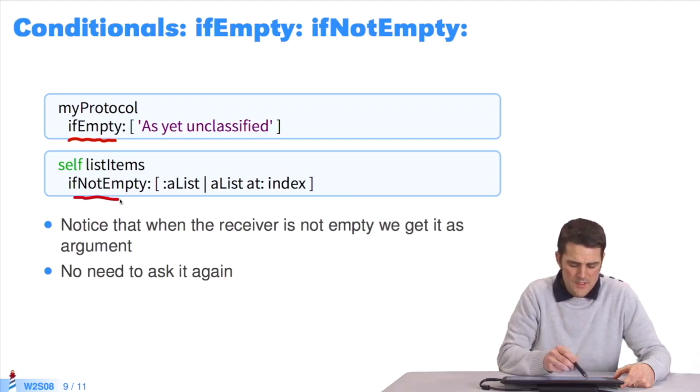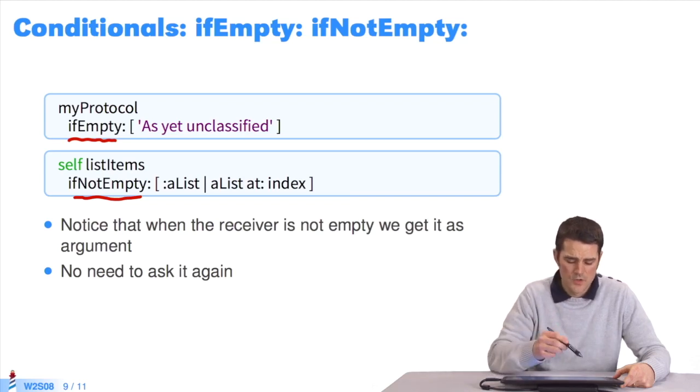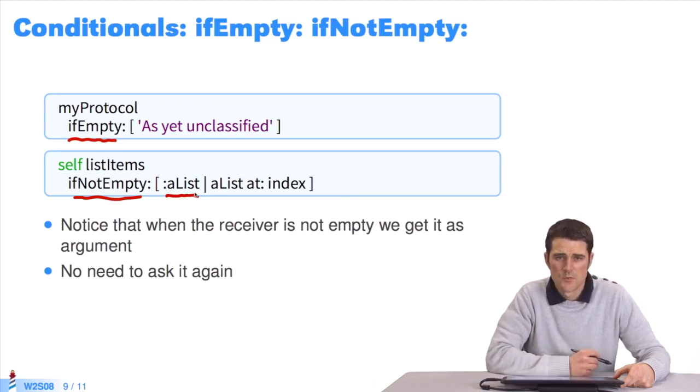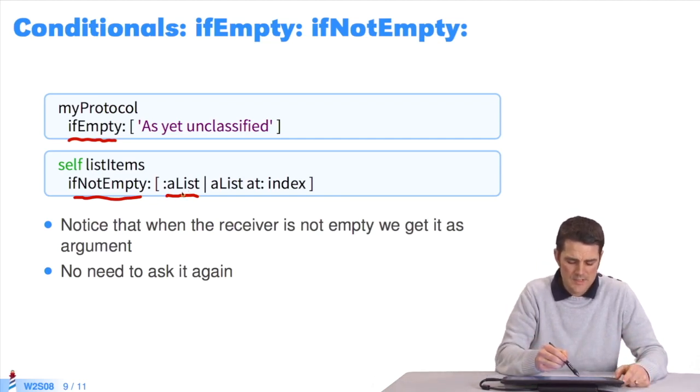ifNotEmpty: is the opposite condition. If the collection isn't empty, then you execute the block. But there's an extra feature: this block takes an argument as a parameter, which is the non-empty collection. The collection might be the result of a complex computation. If the collection isn't empty, it is passed as the block's parameter and can be used in the expressions of the block.